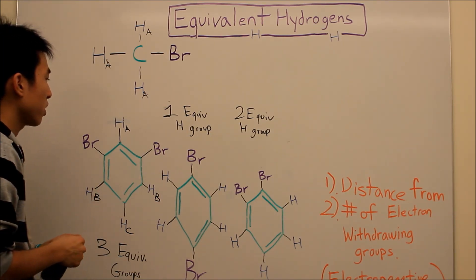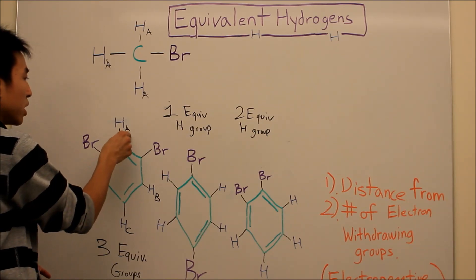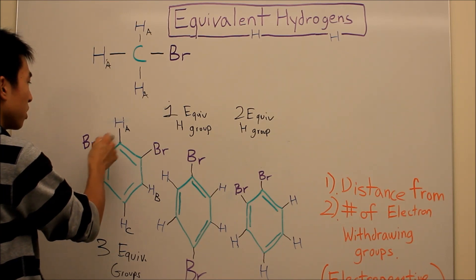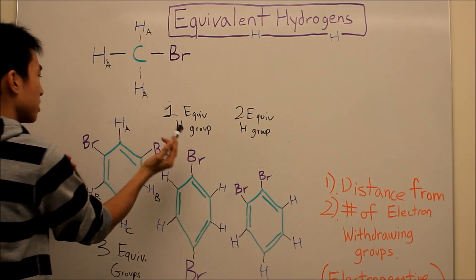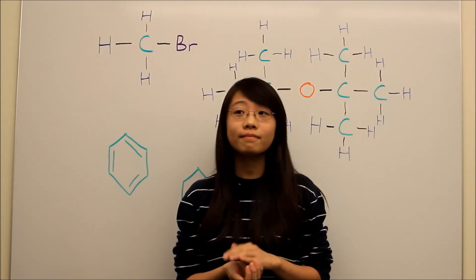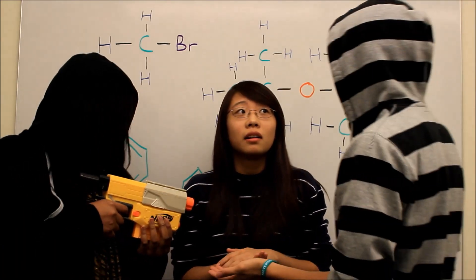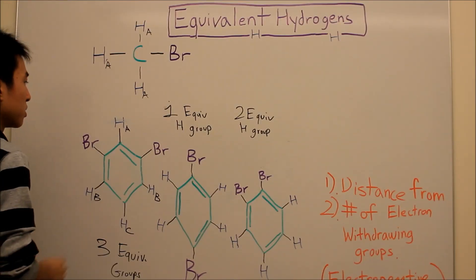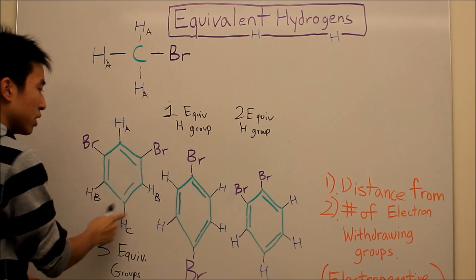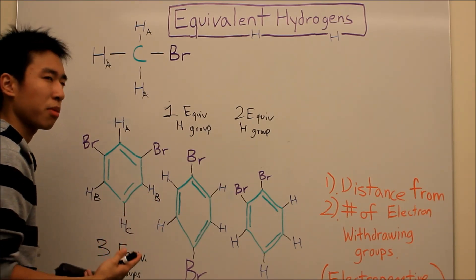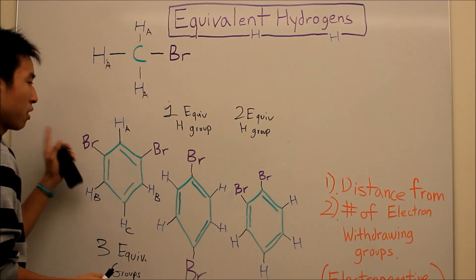In case you were wondering why they're different, this hydrogen here, its distance from the electronegative groups is one bond, two bond, three bond, one bond, two bond, three bond. And it's being sandwiched by two bromines that are electronegative and taking away its electrons and deshielding the hydrogen. Give me all your electrons. So this is probably going to be your most deshielded hydrogen, and no other hydrogen here feels the same effect. This guy's kind of on the side, he's kind of being scared by only one bromine. This guy's kind of farther away, so that's why he's different from him.